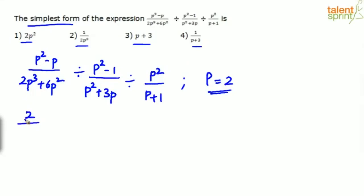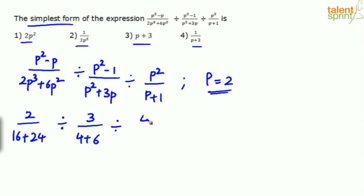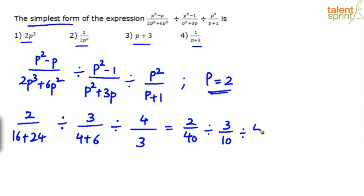So 2/(16 + 24) = 2/40. Divided by (2² - 1)/(2² + 3·2) = 3/10. Divided by 2²/(2+1) = 4/3. On simplification: 2/40 ÷ 3/10 ÷ 4/3. Converting divisions to multiplications by reciprocating gives 2/40 × 10/3 × 3/4.